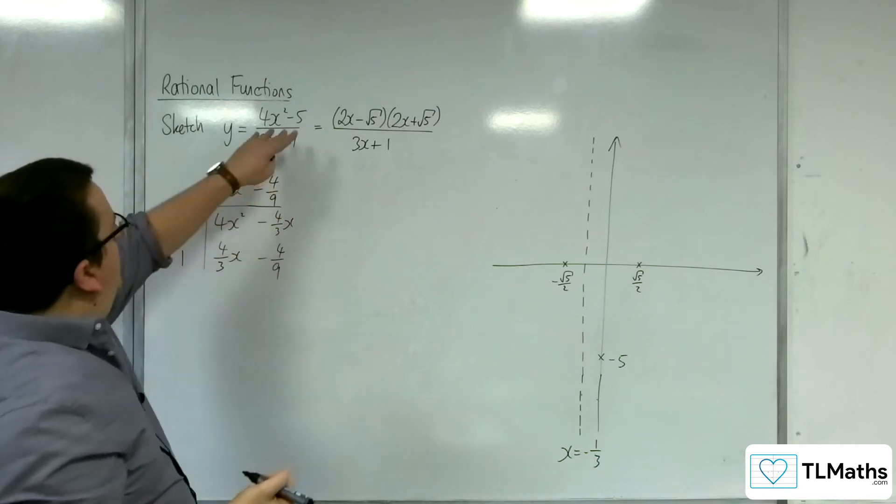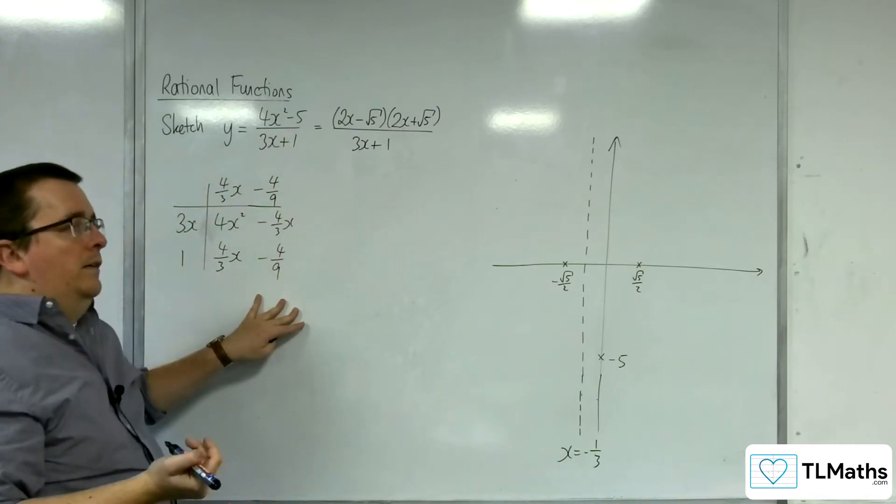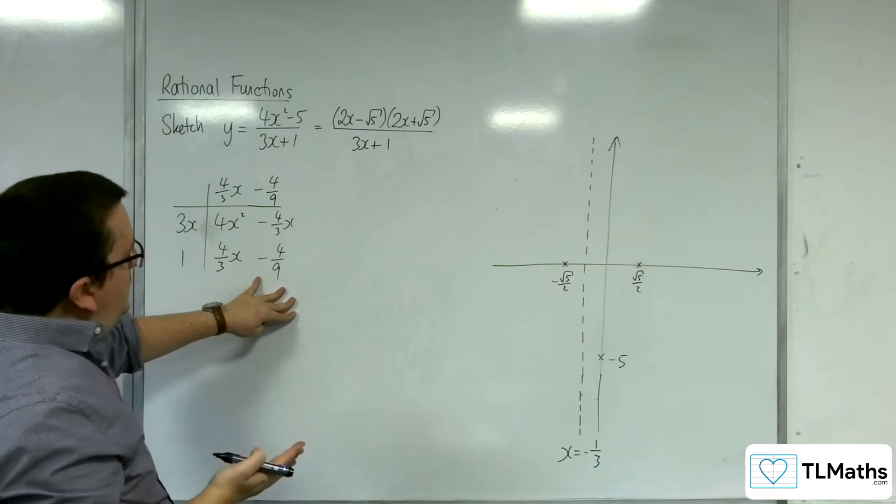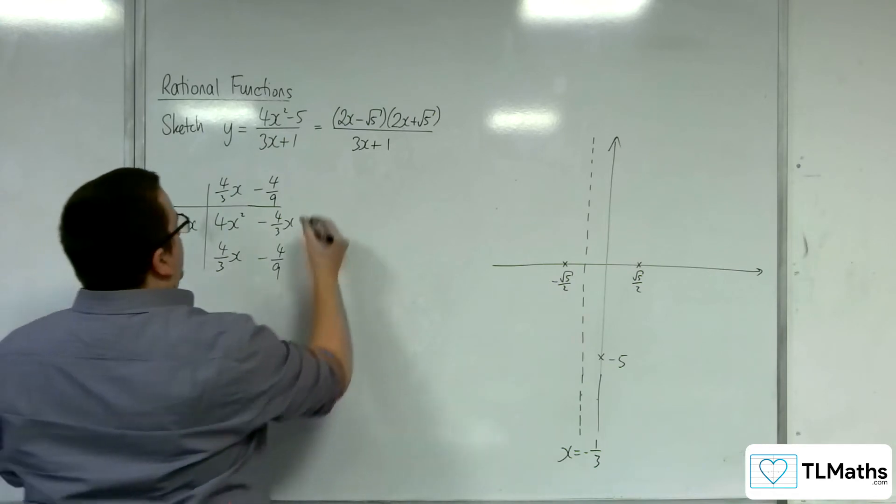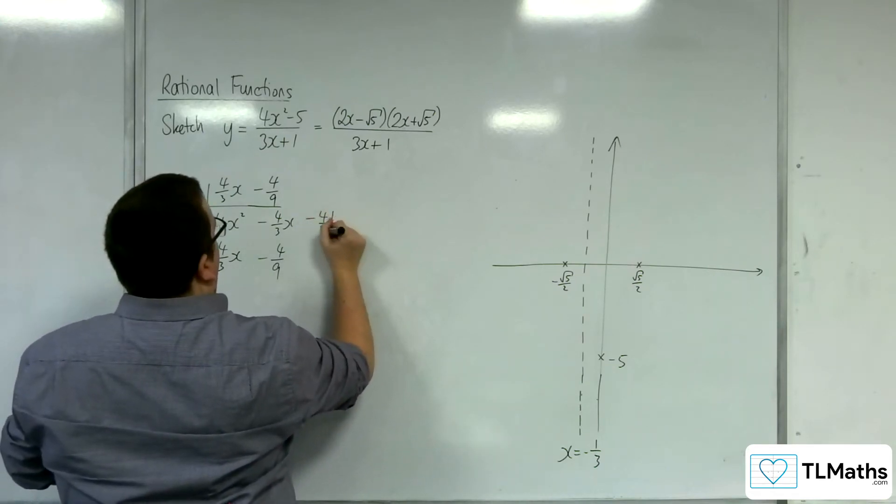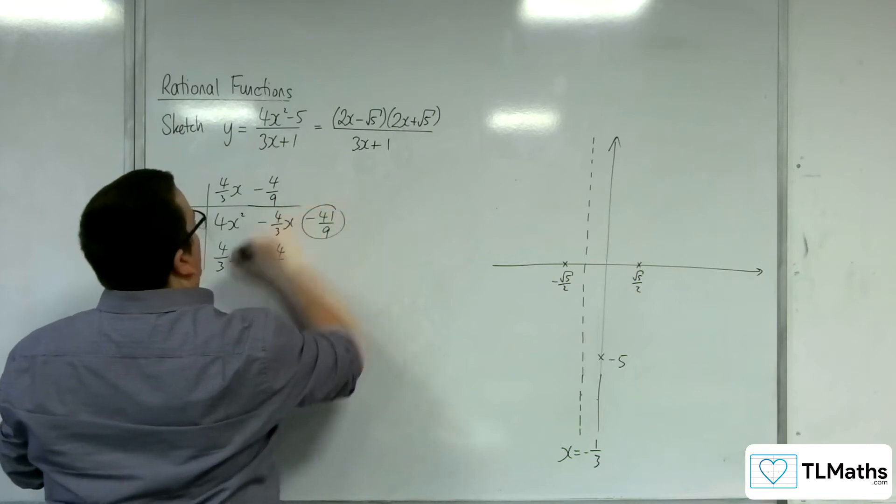Minus 4 ninths times 1 is minus 4 ninths. And I need minus 5. Now 5 is 45 ninths, so I've got to take away another 41 ninths. So that's my remainder.